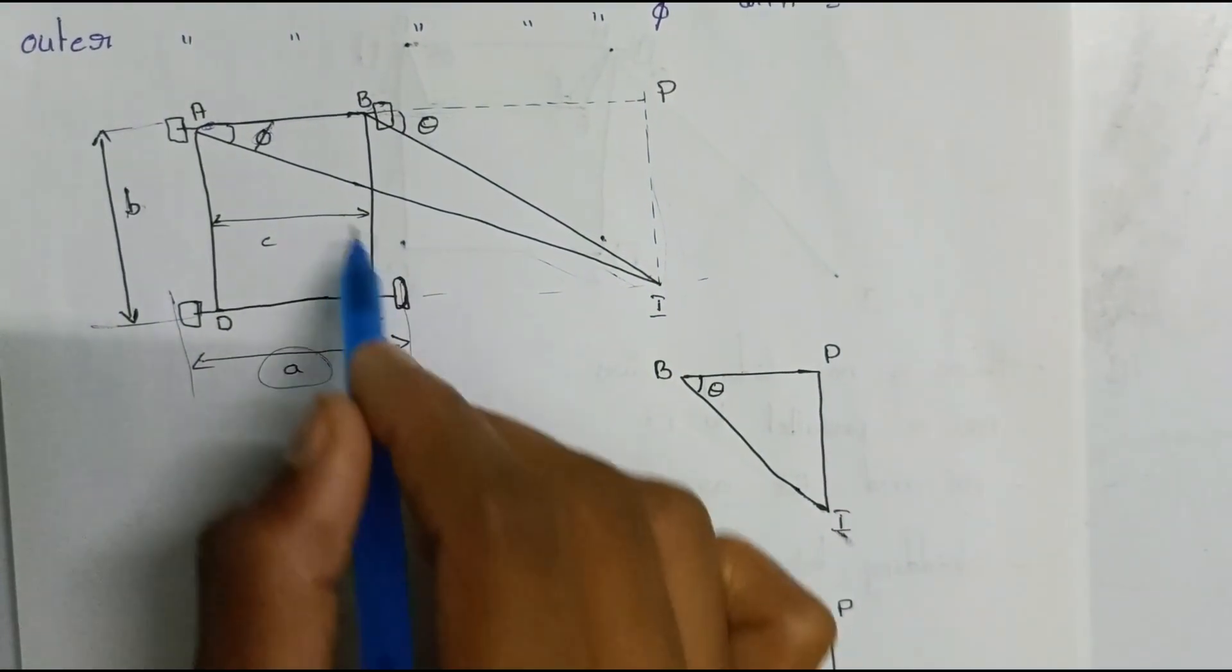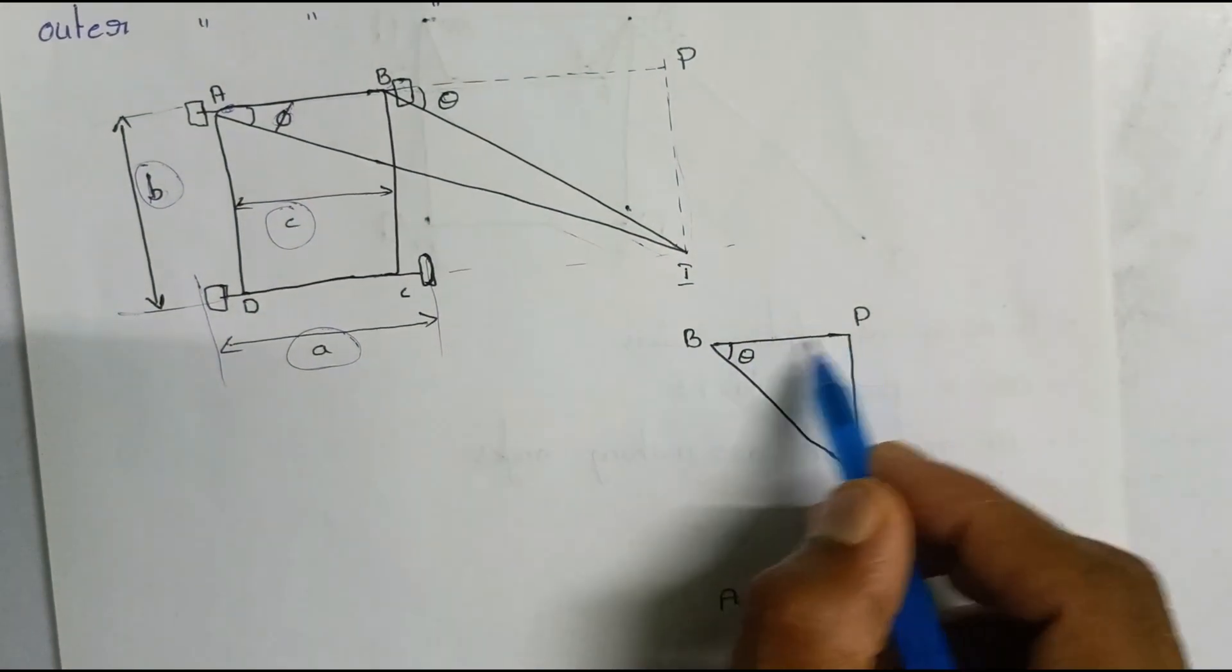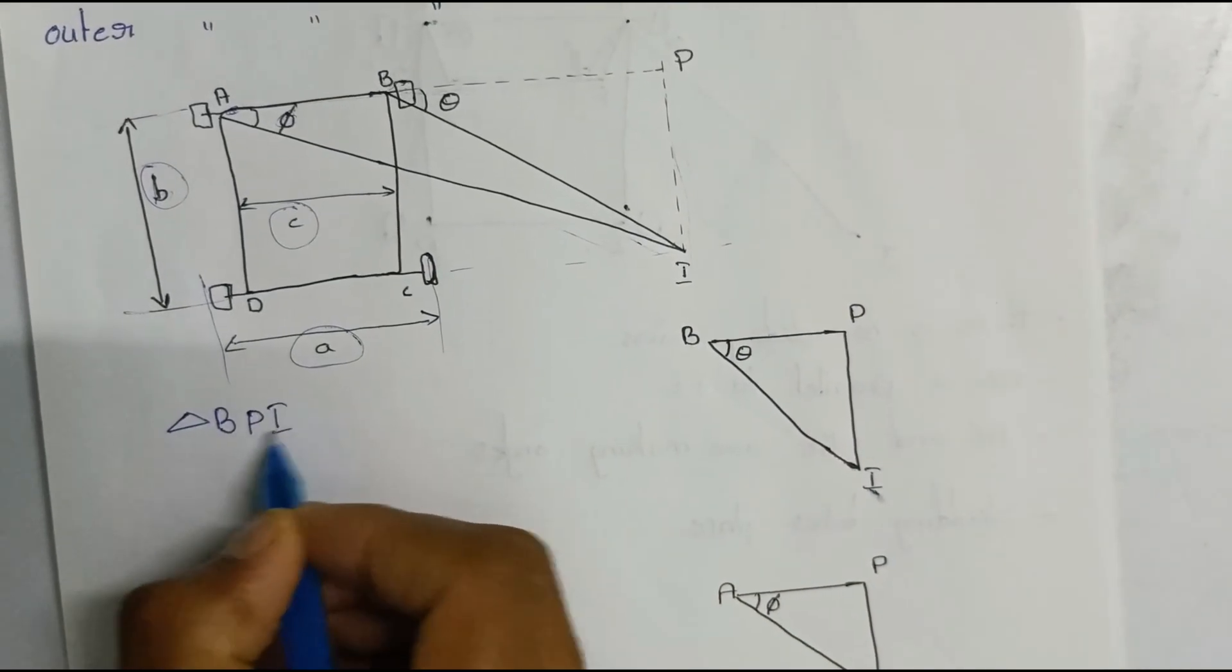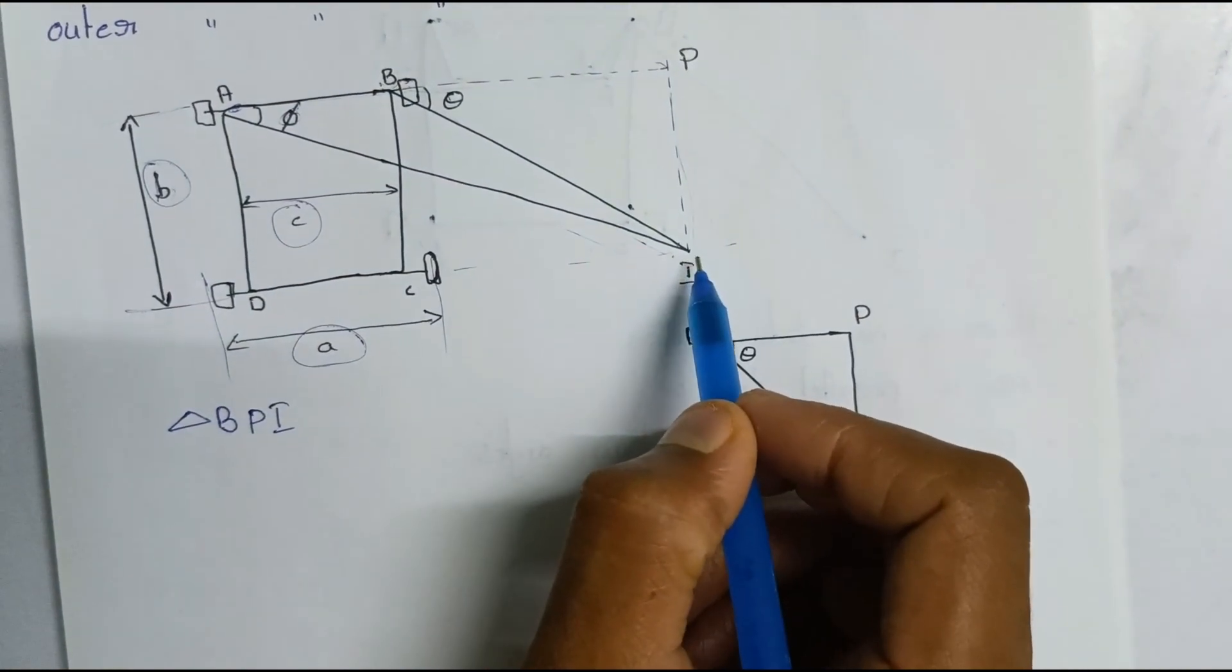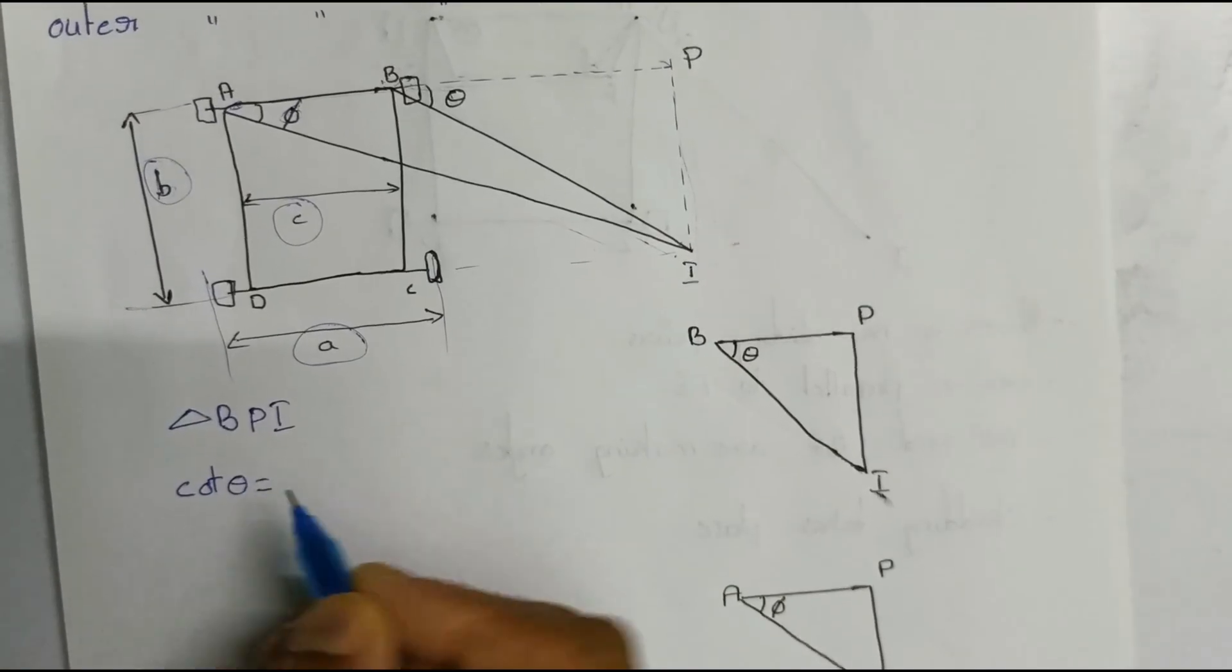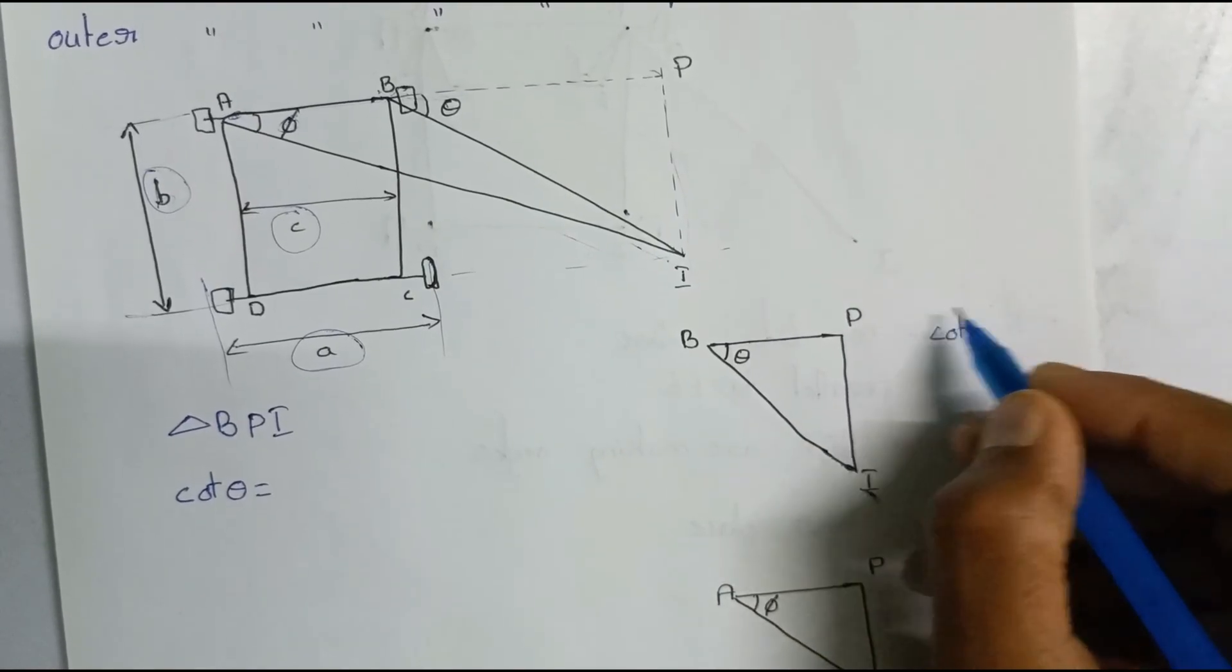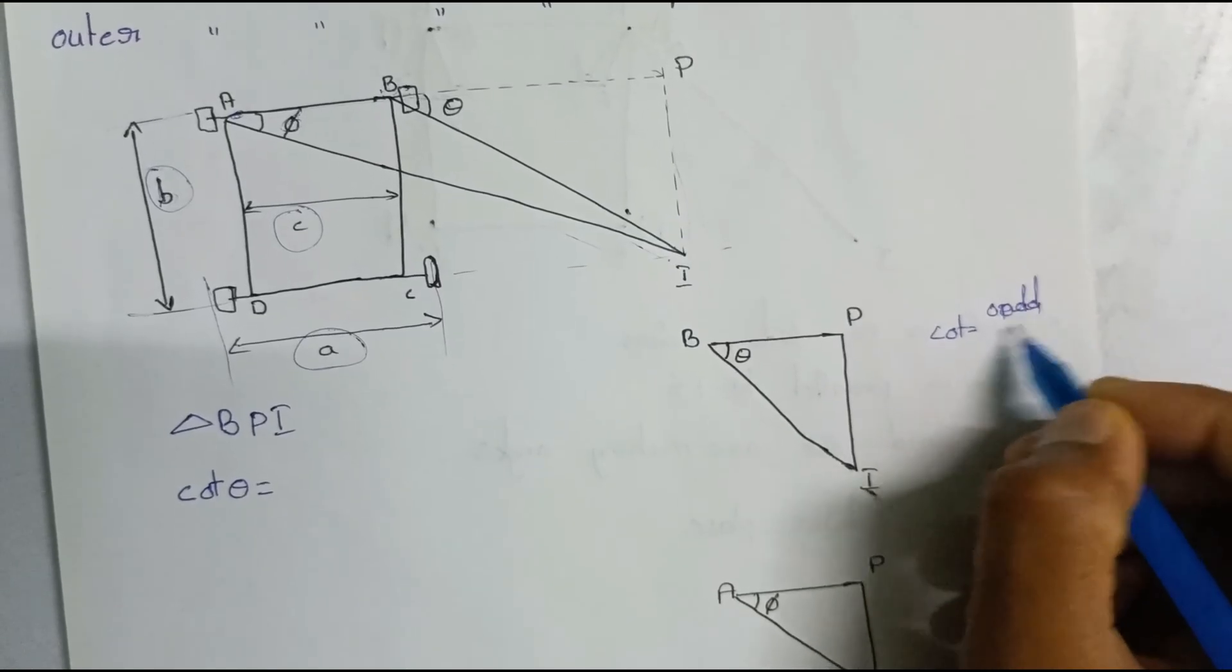Consider triangle B P I. Cot theta is equal to - sorry, cot theta is equal to adjacent side by hypotenuse. Sorry, adjacent side by opposite side.